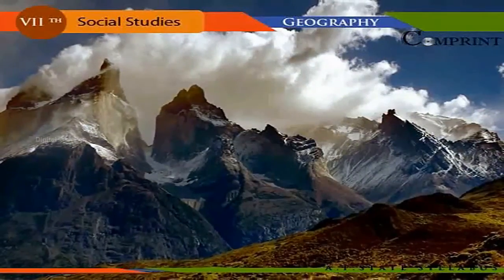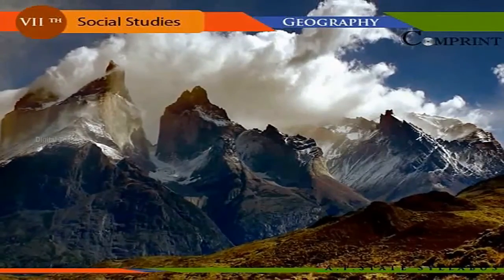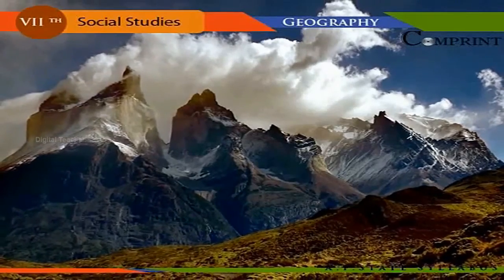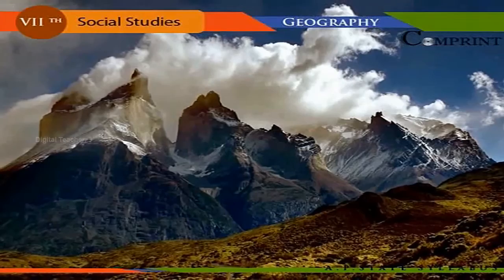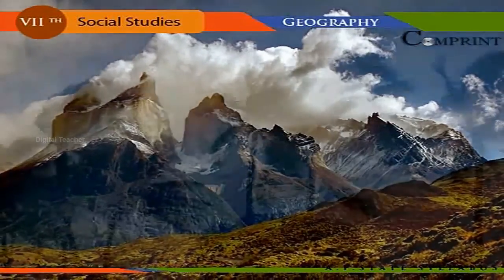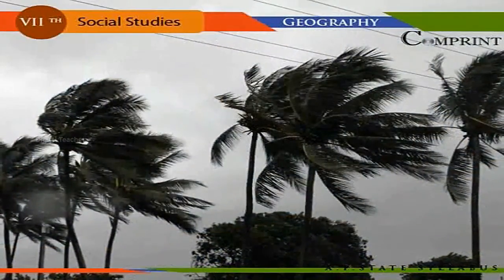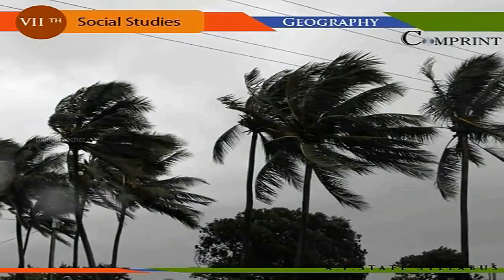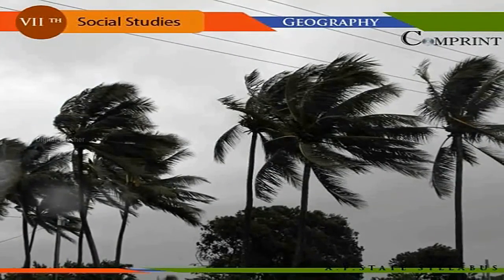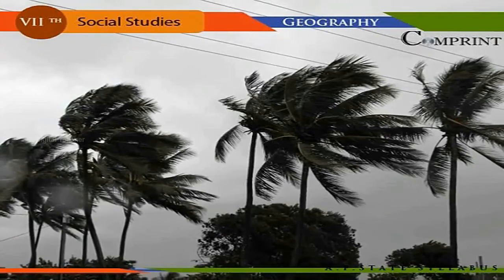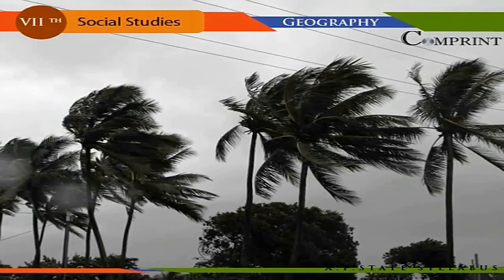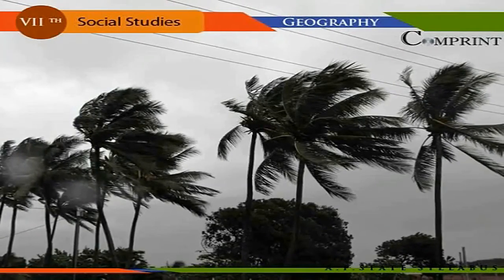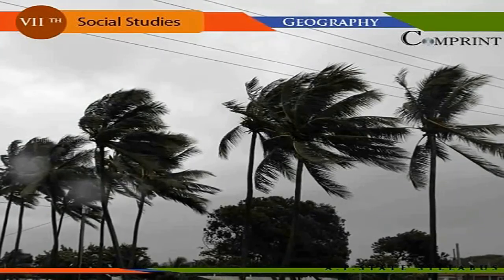Mountain ranges in the path of a rain-bearing wind cause the wind to rise. The rising air expands, cools down, and gets saturated; further ascent leads to rainfall. This type of rainfall is known as relief rainfall, and it is common in mountainous regions. Rain caused by whirling storms is called cyclonic rain. In a cyclone, winds blow in from every side towards the center, and the whirling air rises up and causes rain.